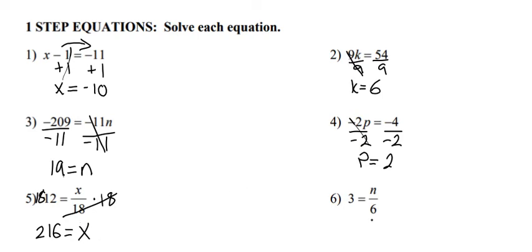For number 6, in order to get n by itself, we have to multiply each side by 6. On the left side, 6 times 3 is 18. And on the right side, the 6s cancel, and we just have n.